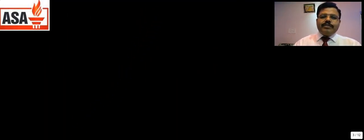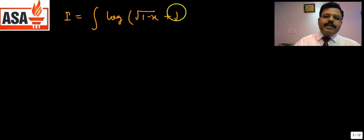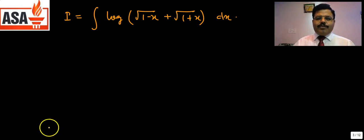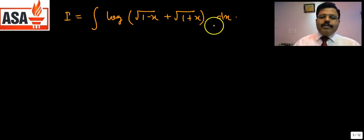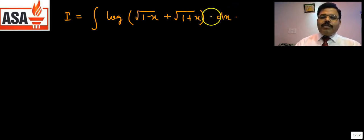Let us look at the next question: integrate log(√(1−x) + √(1+x)) dx. How will we do this? Recall that when we discussed integration by parts, whenever a log function appears alone, we solve it by integration by parts. For integration by parts, when there is no second function, we take it as 1. So we take 1 as the second function and the log term as the first.